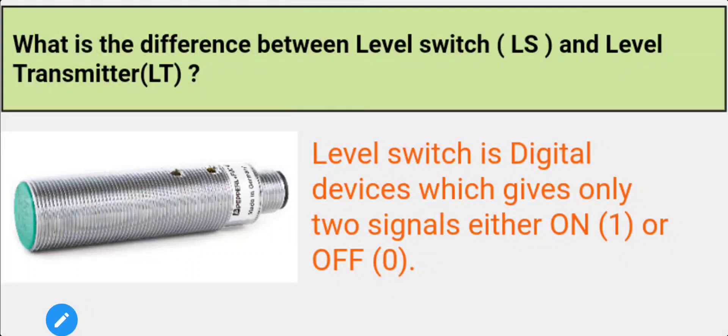Hello friends, welcome back to my channel Instrumentation World. Today in this video we are going to see the difference between level switch and level transmitters. Generally in industry, level switches are used for alarm purpose and interlocking purpose through control systems like PLC or DCS.